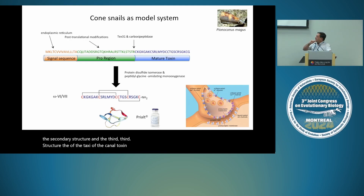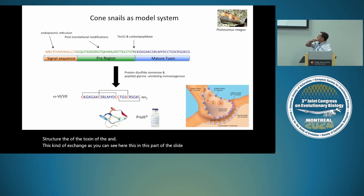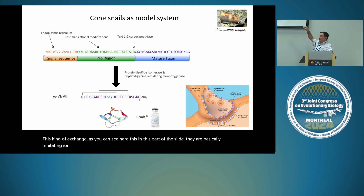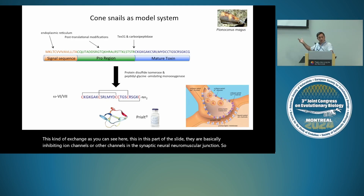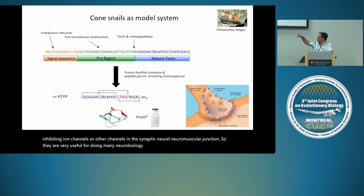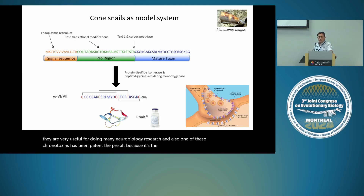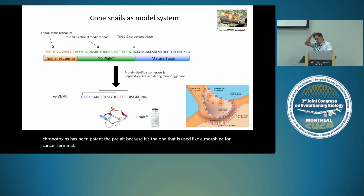These conotoxins are basically inhibiting ion channels or other channels at the synaptic neuromuscular junction. They are very useful for neurobiology research. One conotoxin has been patented — Prialt — because it is used as a morphine substitute for terminal cancer patients as a painkiller.